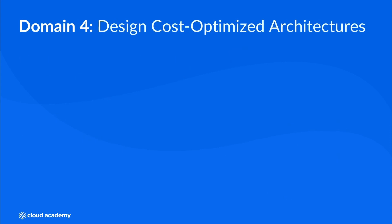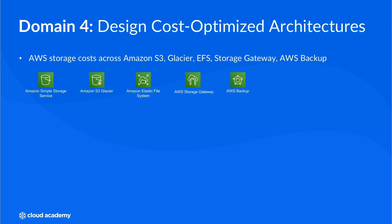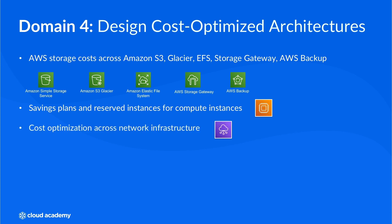The final domain looks at cost optimization of your architecture, so it's important to understand the different costing metrics for different services and how you can optimize their configurations. We spend time looking at costs associated with AWS storage services, covering the full spectrum of price points including service tiers, specific management elements such as provisioned throughput in EFS or S3 replication time control, request types, data retrieval, data transfer and replication. You'll also be introduced to compute savings plans and reserved instances and how these can be optimized to save money across your EC2 fleets, along with a review of cost optimization best practices when designing a cost optimized network architecture.